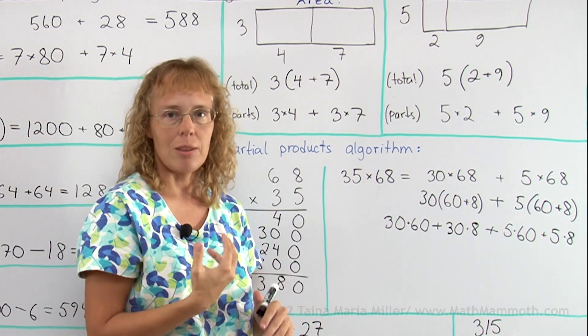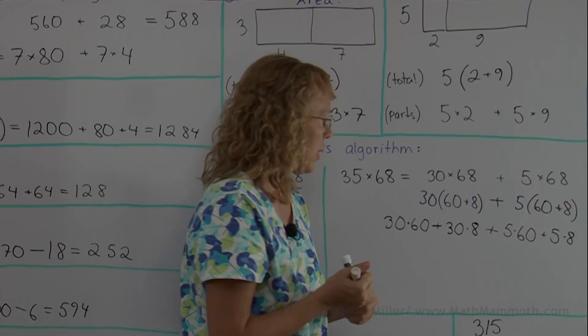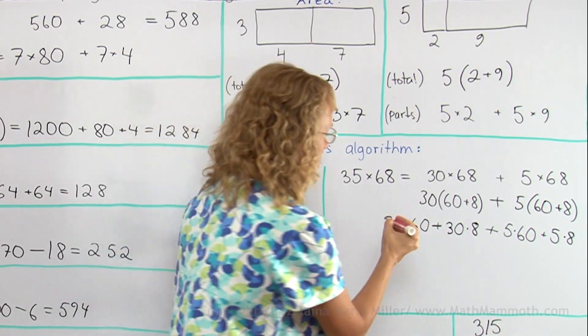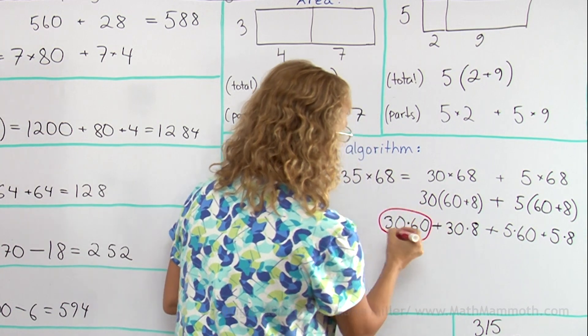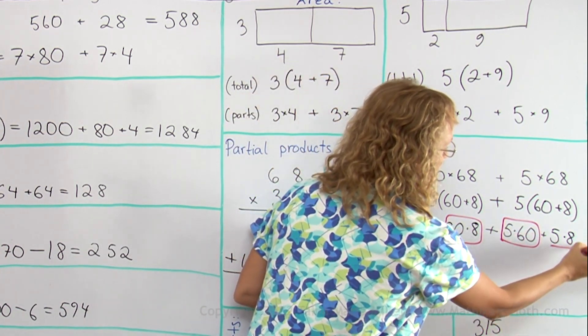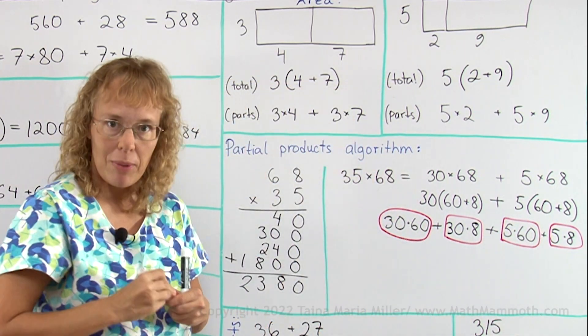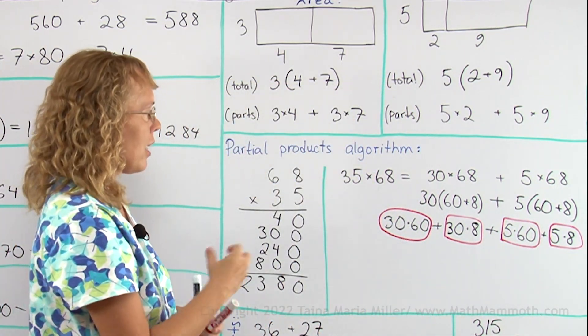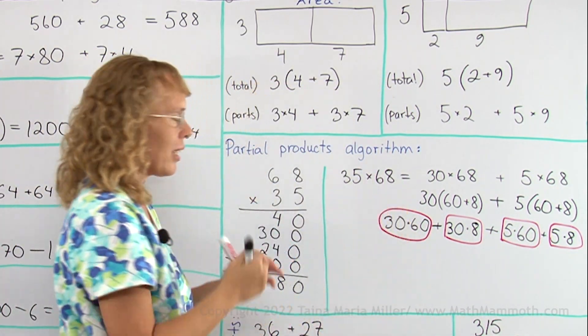Let me get the colored marker pen. I'm going to use this color now to show you clearly. Here's one of them, one of them, one more, one more. So there's 4 different multiplications that we got out of this, breaking it into parts.